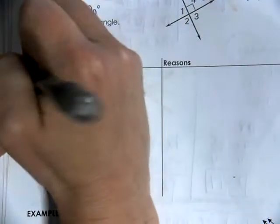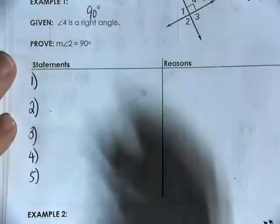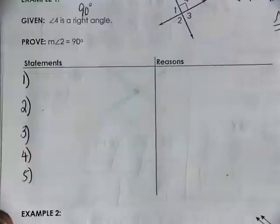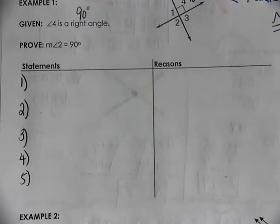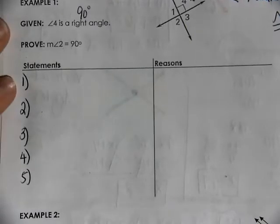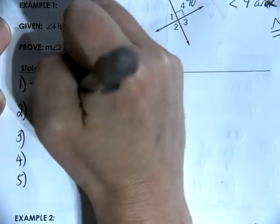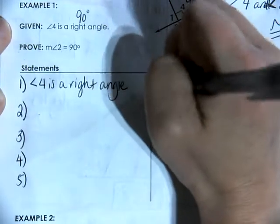In this proof, there are going to be a total of five statements and reasons. I'm going to label this one, two, three, four, and five. For all of the proofs on homework, tests, or quizzes, you will already have the numbers written down, so you don't have to come up with the proof on your own — not quite yet. The first thing we always write when doing a proof is our given, and our given is that angle four is a right angle, and we write this because it is given.